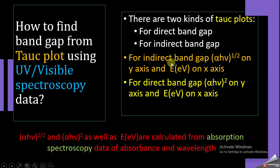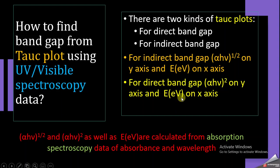For the indirect band gap you plot the value alpha·hν raised to power 1/2 on the y-axis, and you have energy in electron volts on the x-axis. For direct band gap materials you have alpha·hν raised to power 2 on the y-axis and energy on the x-axis, and from these plots you determine the value of the band gap for your material.